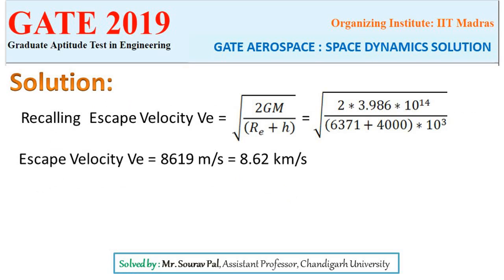Remember that the radius of Earth and the altitude are given in km, so here we have converted them to meters. We get the escape velocity as 8,619 m/s, which in terms of km per second is 8.62 km/s.